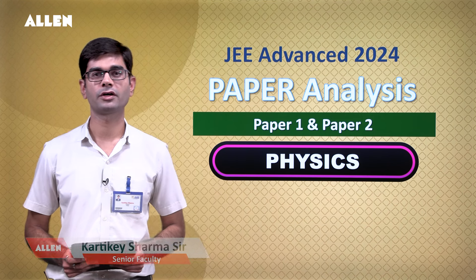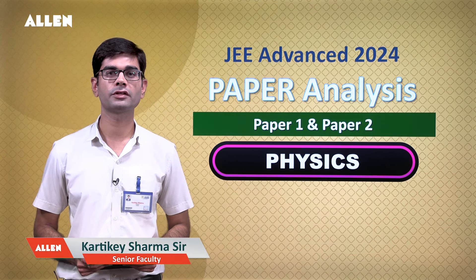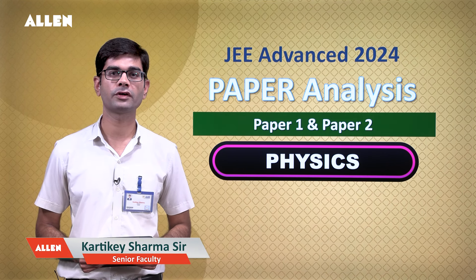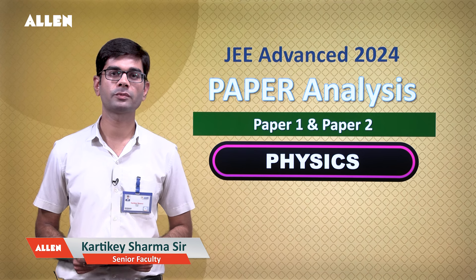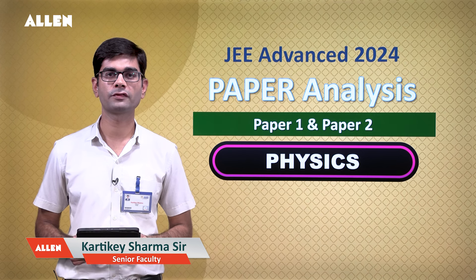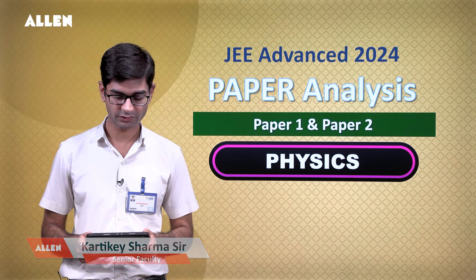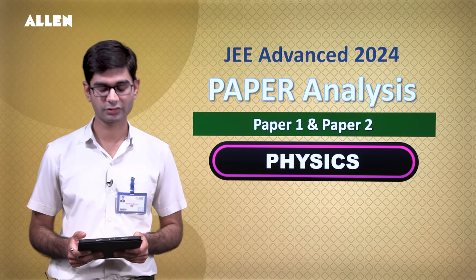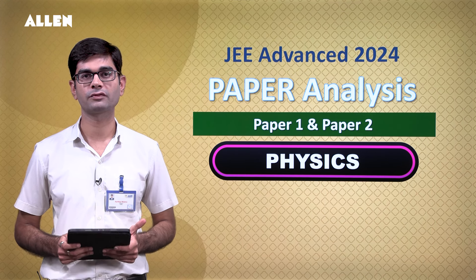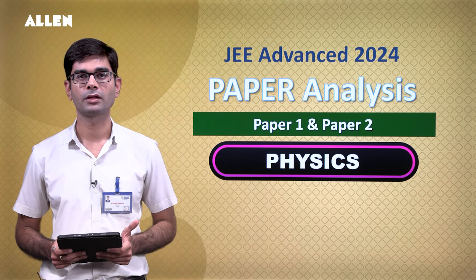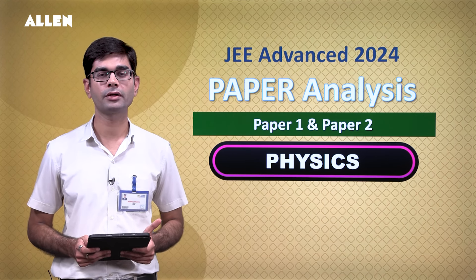Hello students, myself Kartike Sharma. Today I will be discussing the analysis of JEE Advanced 2024 physics paper. If we talk about weightage-wise, the physics paper is almost 35% from 11th class and 12th class weightage is almost 65%. Paper 1 is on the easier side.